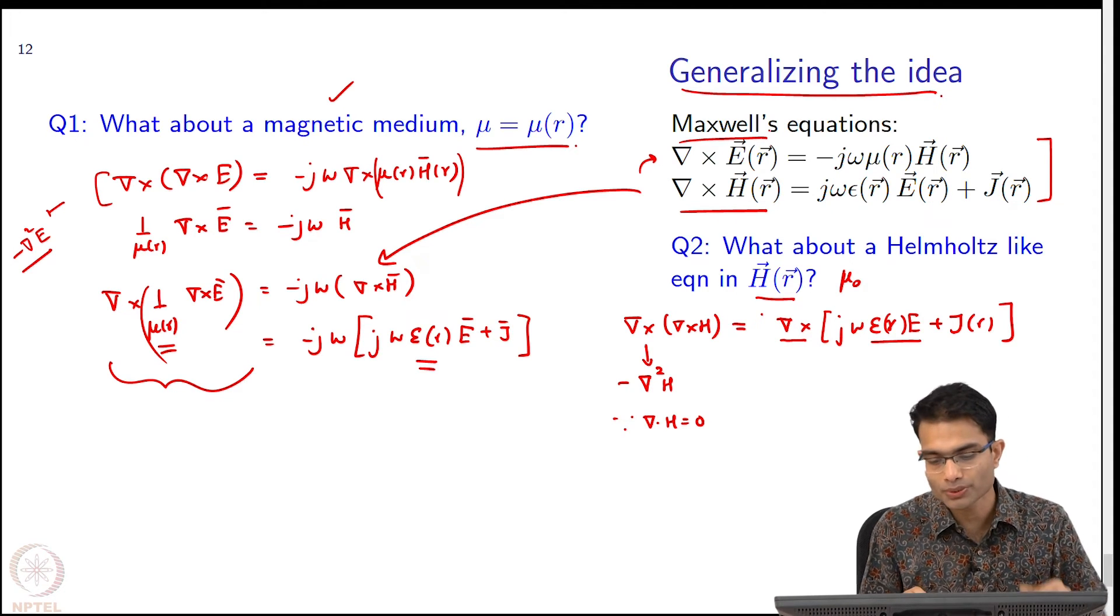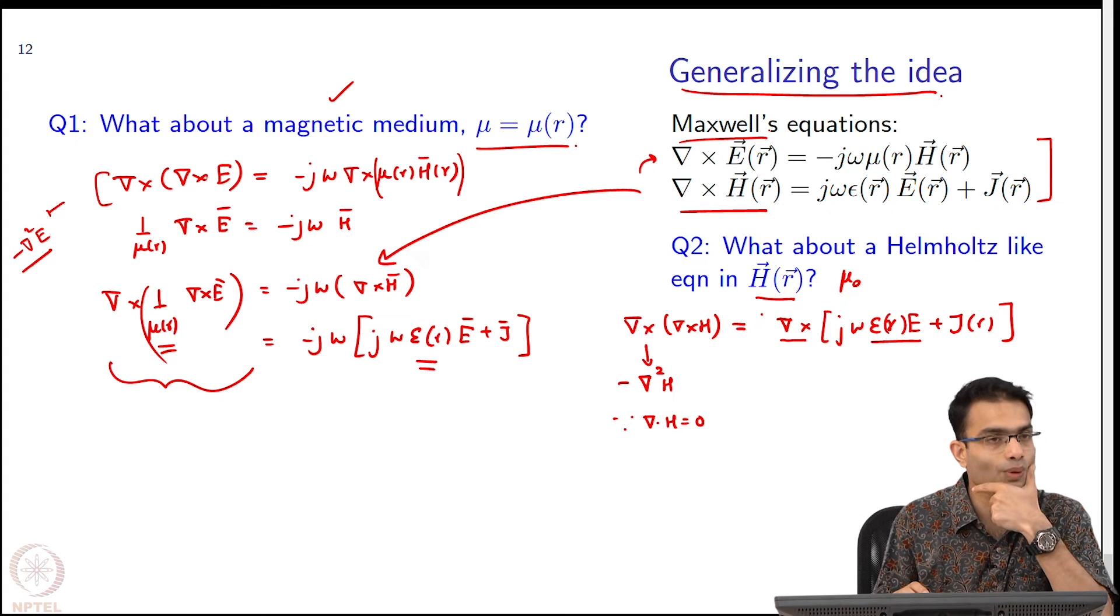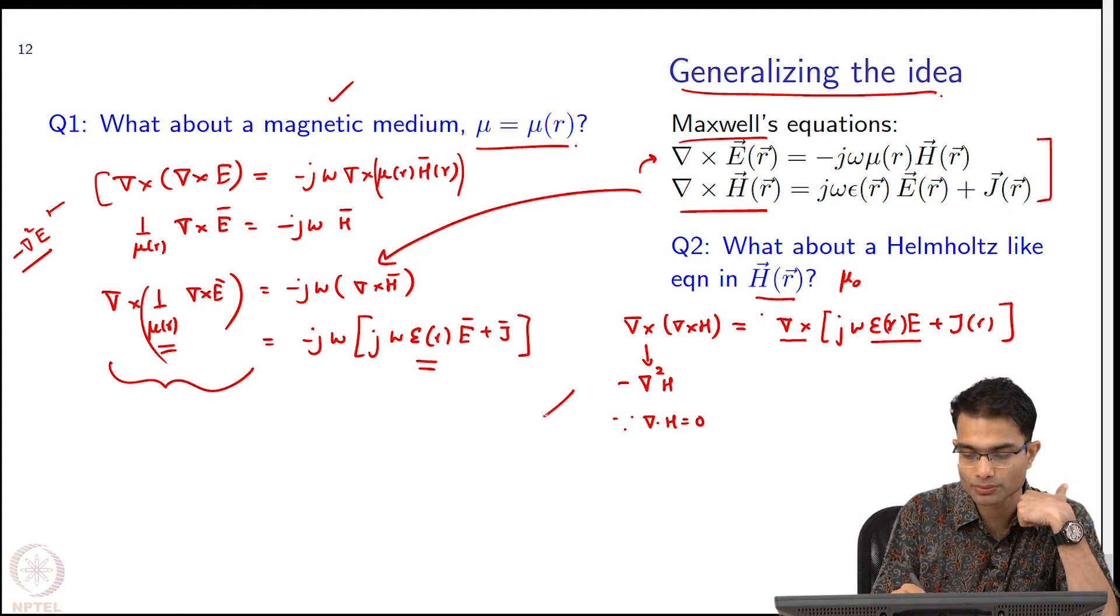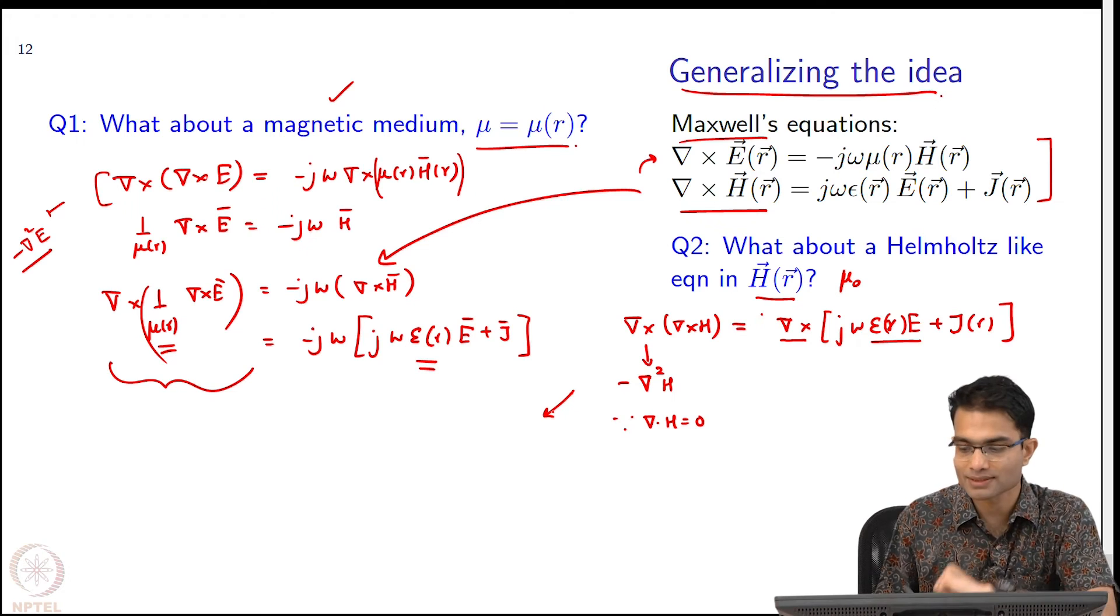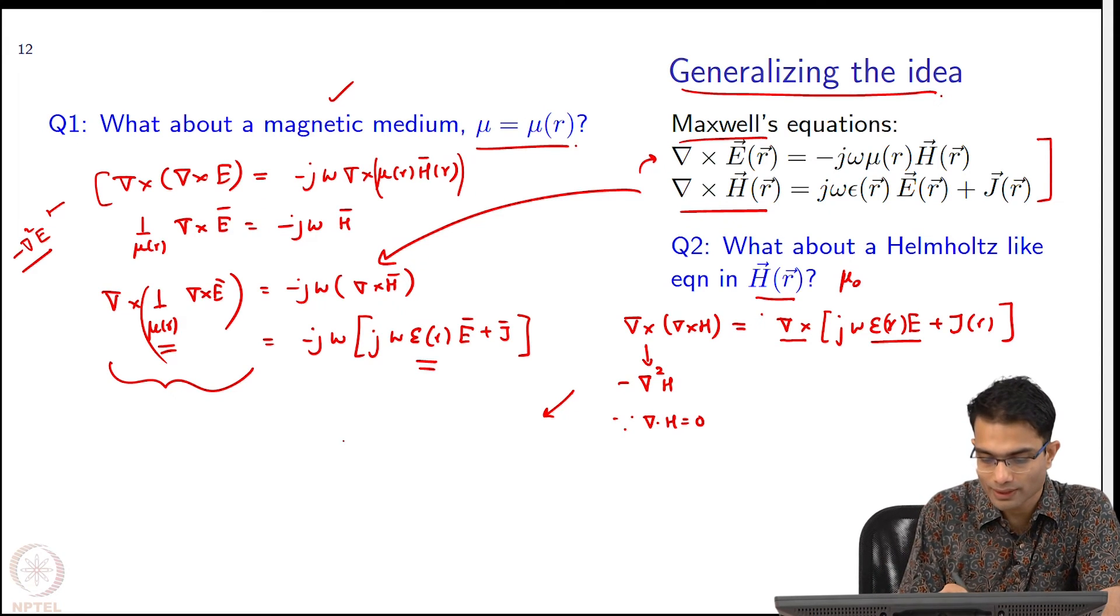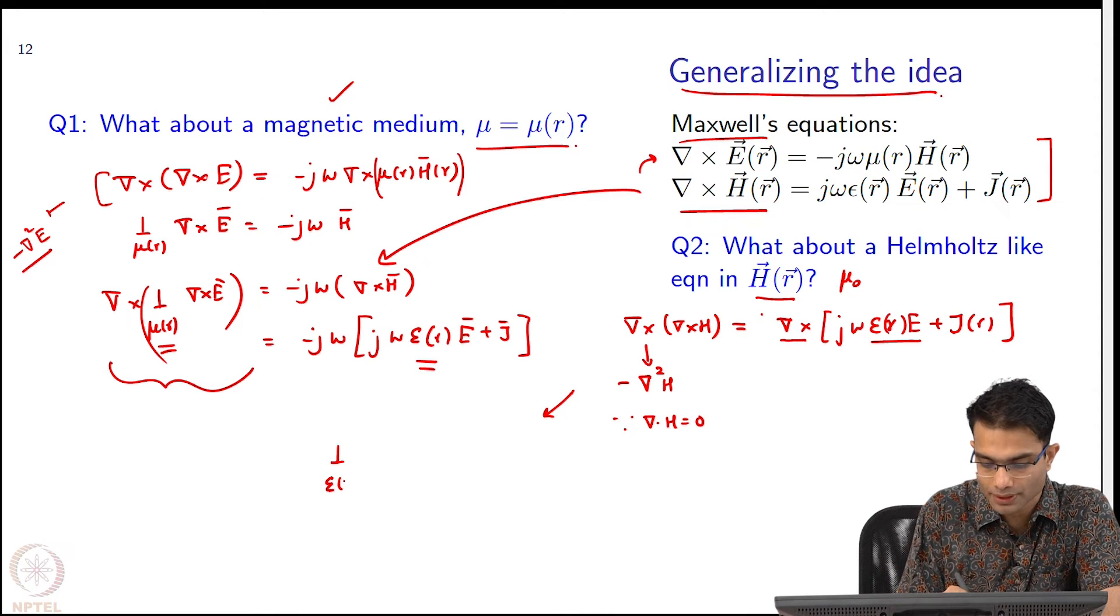So, I cannot simplify this. So, what would you do in this case? If you wanted to get an equation in H what would you do? Same trick as this. So, what I will do is I will get a 1 by epsilon r over here and a del cross H. I have a j by epsilon. And then you will have a j by, that is ok. I do not need, I mean all I want is some way of simplifying del cross del cross H.